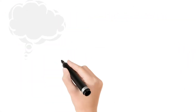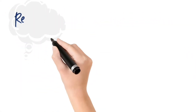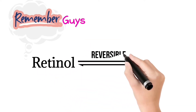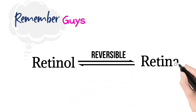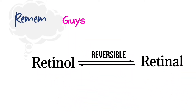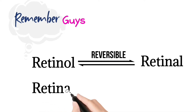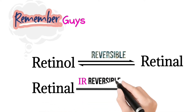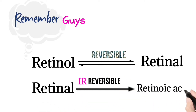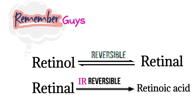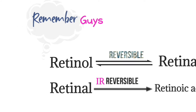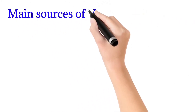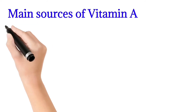Remember: retinol is converted into retinal — this is a reversible process. Retinal is converted into retinoic acid — this is an irreversible process. Next, we will discuss the main sources of Vitamin A.